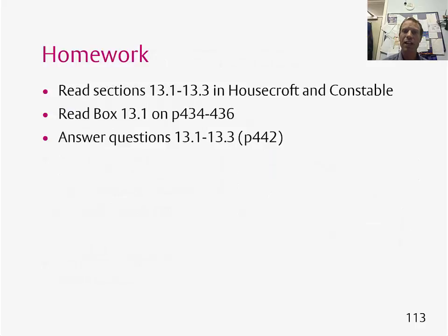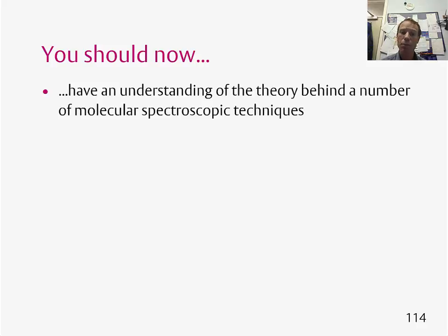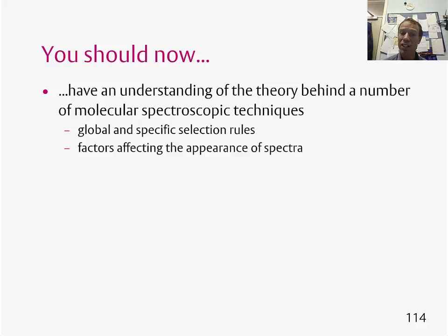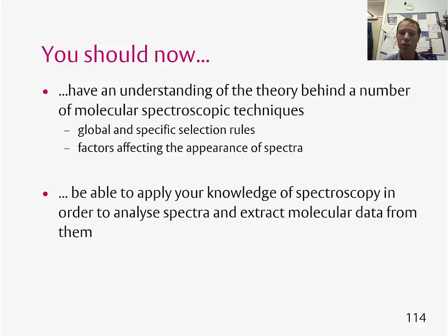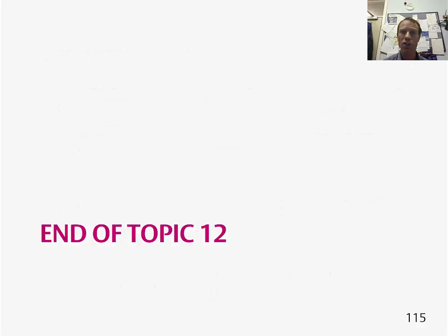Some homework for you: there are sections in Housecroft and Constable to read, a box to read, and some questions to have a go at. That brings us to the end of this course on molecular spectroscopy. As a summary, you should now have an understanding of the theory behind a number of molecular spectroscopic techniques — in particular, global and specific selection rules; factors that affect the appearance of spectra such as anharmonicity and the effect of temperature; and the effect of degeneracy of energy levels. You should be able to apply your knowledge to analyse different types of spectra and extract molecular data from them, and be ready to apply it in workshops, a tutorial, and in the practical course later this term.